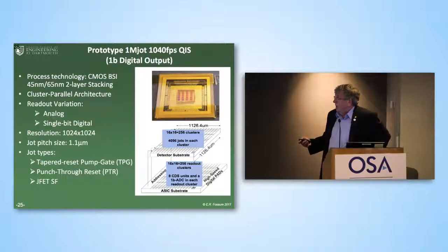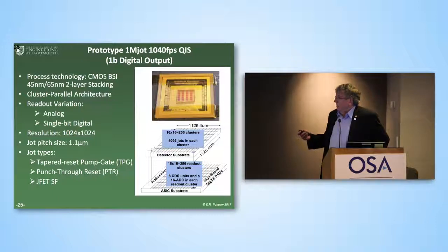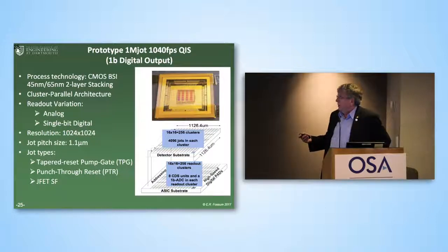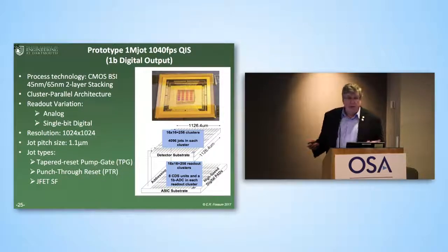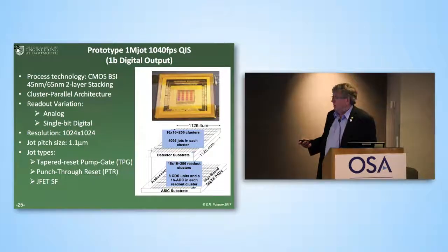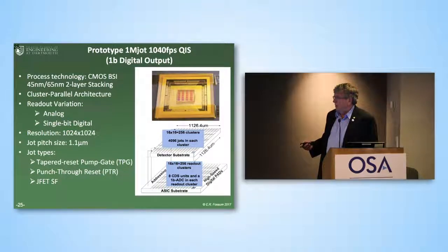Thanks to the generosity of TSMC, we built a one-million-pixel — we call these JOTs — array that operates at 1,040 frames per second with a one-bit digital output. There are actually 20 different designs on this test chip, so it's effectively 20 separate one-megapixel JOT devices. We have both analog readout and single-bit digital variants, a pixel pitch of 1.1 microns, a shared readout structure, and different types of JOT implementations — all on this one chip.